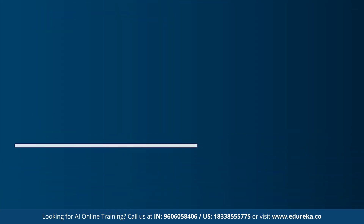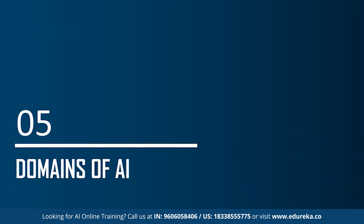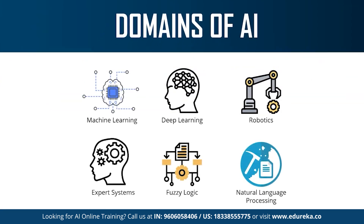Moving on to the last topic: the different domains or branches of artificial intelligence. AI can be used to solve real-world problems by implementing machine learning, deep learning, natural language processing, robotics, expert systems, and fuzzy logic. AI has also recently been used in computer vision and image processing. Machine learning is basically the science of getting machines to interpret, process, and analyze data in order to solve real-world problems. Under machine learning, there's supervised, unsupervised, and reinforcement learning.